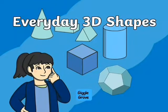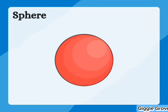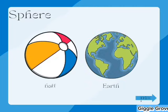Hi everyone! Today, I want to talk about some interesting shapes we see all around us. A sphere is a perfectly round, three-dimensional shape with all points on its surface equally distant from the center.